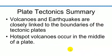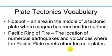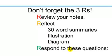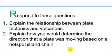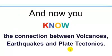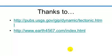To summarize, volcanoes and earthquakes are closely linked to the boundaries of tectonic plates, and hotspot volcanoes can occur in the middle of a tectonic plate. Two new vocabulary words: hotspot and the Pacific Ring of Fire. Review your notes, do a reflection on each left side of your notes – that can be a 30-word summary, an illustration, a diagram, or a bubble map. Answer these questions: explain the relationship between plate tectonics and volcanoes, and explain how you would determine the direction that a plate was moving based on a hotspot island chain. Now you know the connection between volcanoes, earthquakes, and plate tectonics. Thanks for watching.